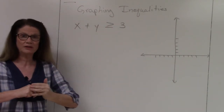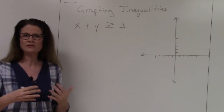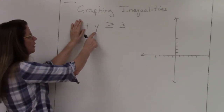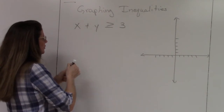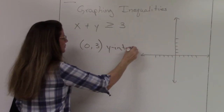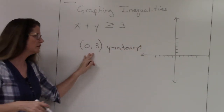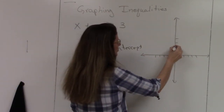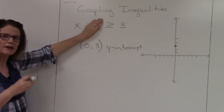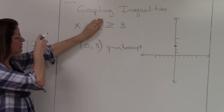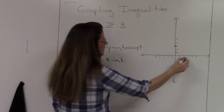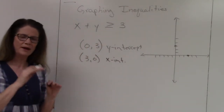The cover-up method is how we find the x- and y-intercepts. When we cover up the x value, that's when x is zero, so we get a y value. In this case, y equals 3, so my y-intercept is the point (0, 3) — I put a point at y equals 3 on the y-axis. Covering up y means y is zero, so x equals 3, giving us x-intercept (3, 0) on the x-axis.